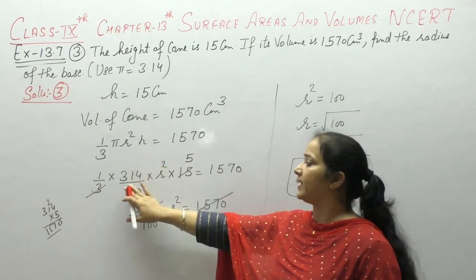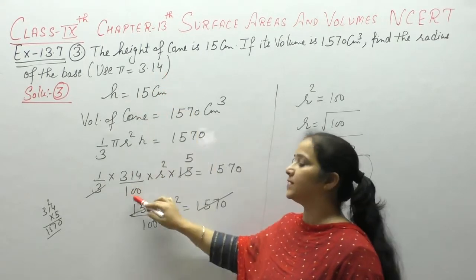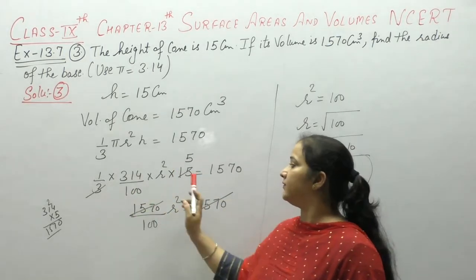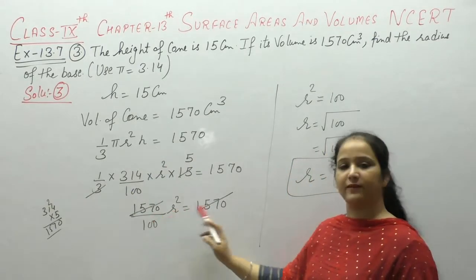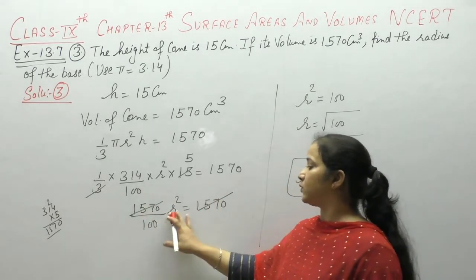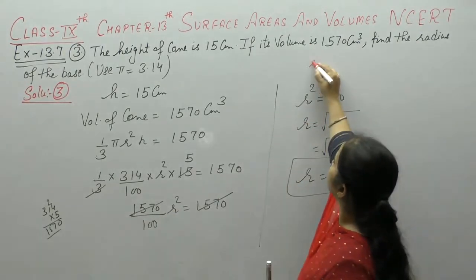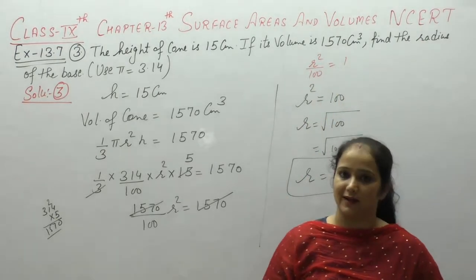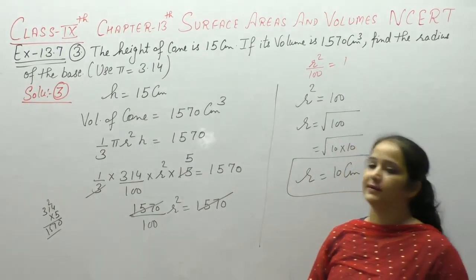We know that the value of pi is 3.14 and the decimal has 2 digits so upon 100. Height is 15, volume given. 3 fives are 15, 314 into 5 is 1570. Both sides have same value, this is multiplied so this cancels. R square upon 100 is equal to 1. R square is 1 into 100 is 100, so radius is square root of 100 that is 10 cm. Clear, easy easy.